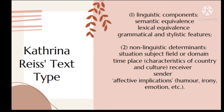Text types are therefore categorized according to their main function. For each of these text types, Reiss also gives examples of what she calls text varieties, now more commonly known as genres, that are typically associated with them. Reiss also lists a series of interlinguistic and extra-linguistic instruction criteria by which the adequacy of a target text may be assessed.